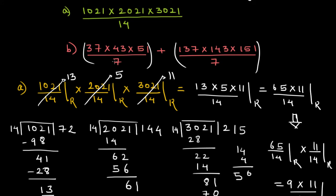For the second problem, dividing 37 by 7 gives remainder 2 — since 35 is in the table. Dividing 43 by 7: 7 times 6 is 42, so remainder is 1. Dividing 47 by 7: 7 times 7 is 49 — so remainder is 2. So 2 times 1 times 2 gives 4 as the remainder for this first group.